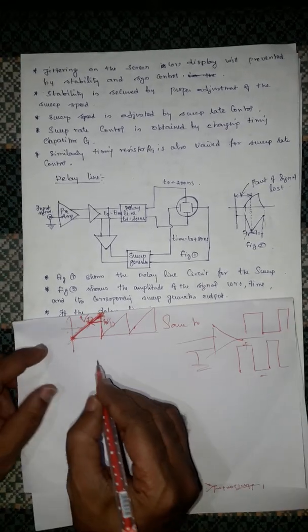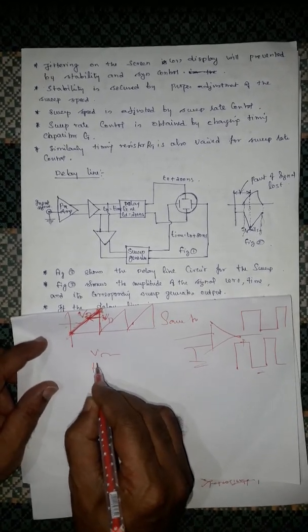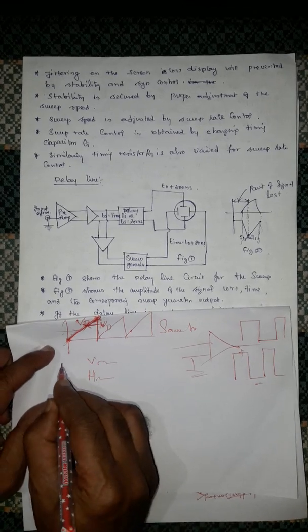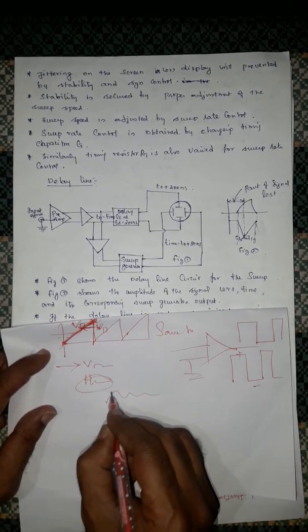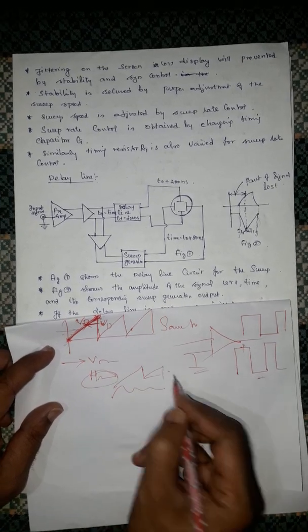That is a vertical system and then a horizontal system. Usually, the input will be given to the vertical system. The horizontal, we are having the sweep and all.